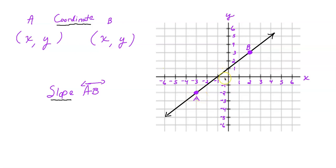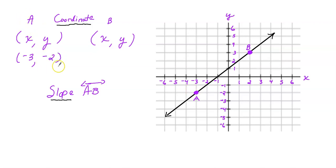So let's do that. A coordinate is always written as x, y. Starting at the origin, on the x-axis I need to move three units to the left, so that's negative three. Then I need to move two units down, so that's negative two. The coordinate of point A is negative three, negative two. I always suggest moving horizontally first and then vertically next — it makes it easier.